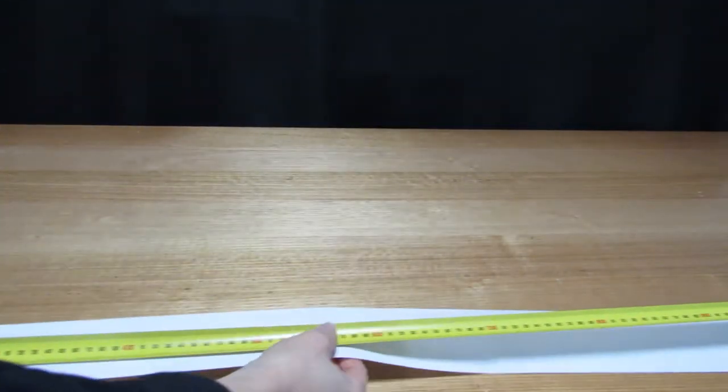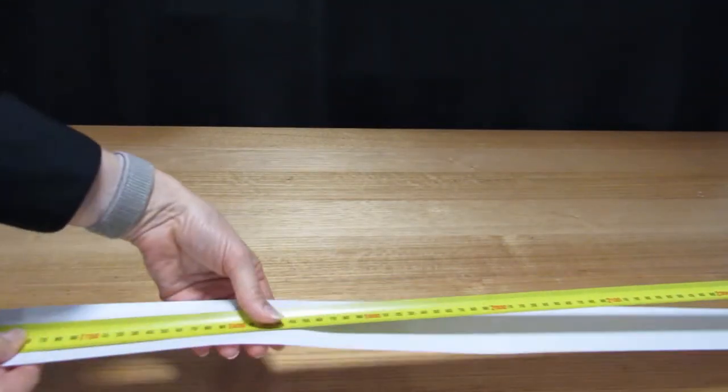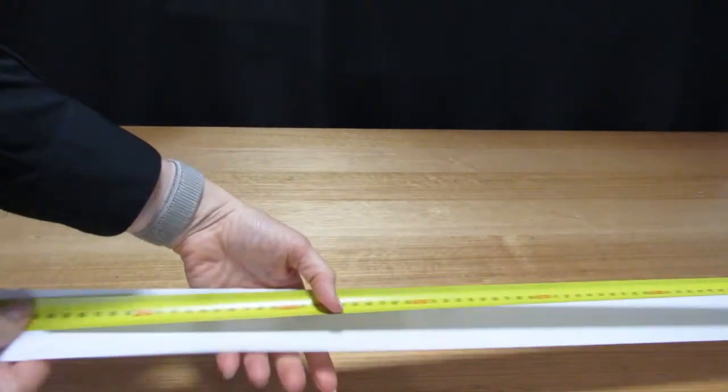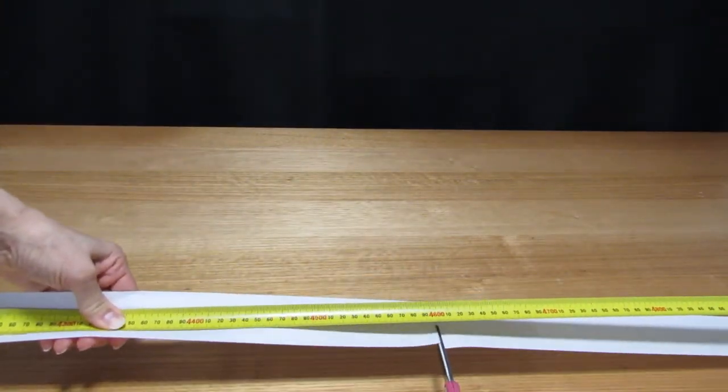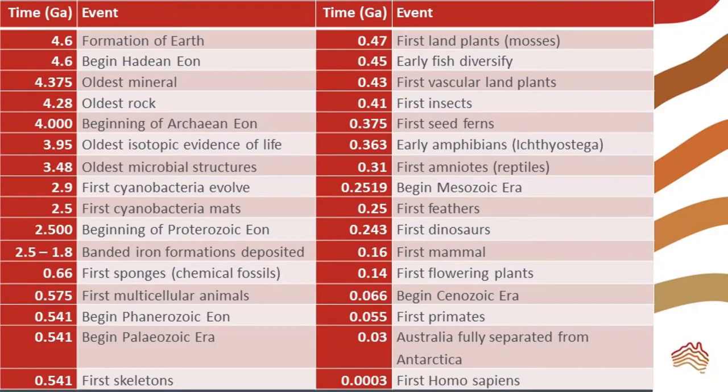Start off by measuring out 4.6 meters of paper and cut it at the 4.6 meter mark. This will be our timeline. Next, we will mark these significant events in Earth's history along the timeline.